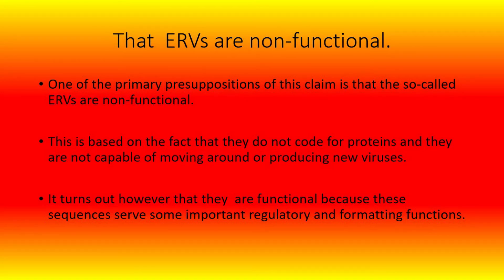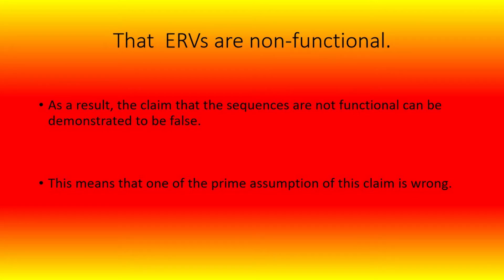The next assumption is that ERVs are non-functional. One of the primary presuppositions of this claim is that the so-called ERVs do not code for proteins and are not capable of moving around or producing new viruses. It turns out, however, that they are functional because these sequences serve important regulatory and formatting functions. As a result, the claim that the sequences are not functional can be demonstrated to be false, meaning one of the prime assumptions of this claim is wrong.